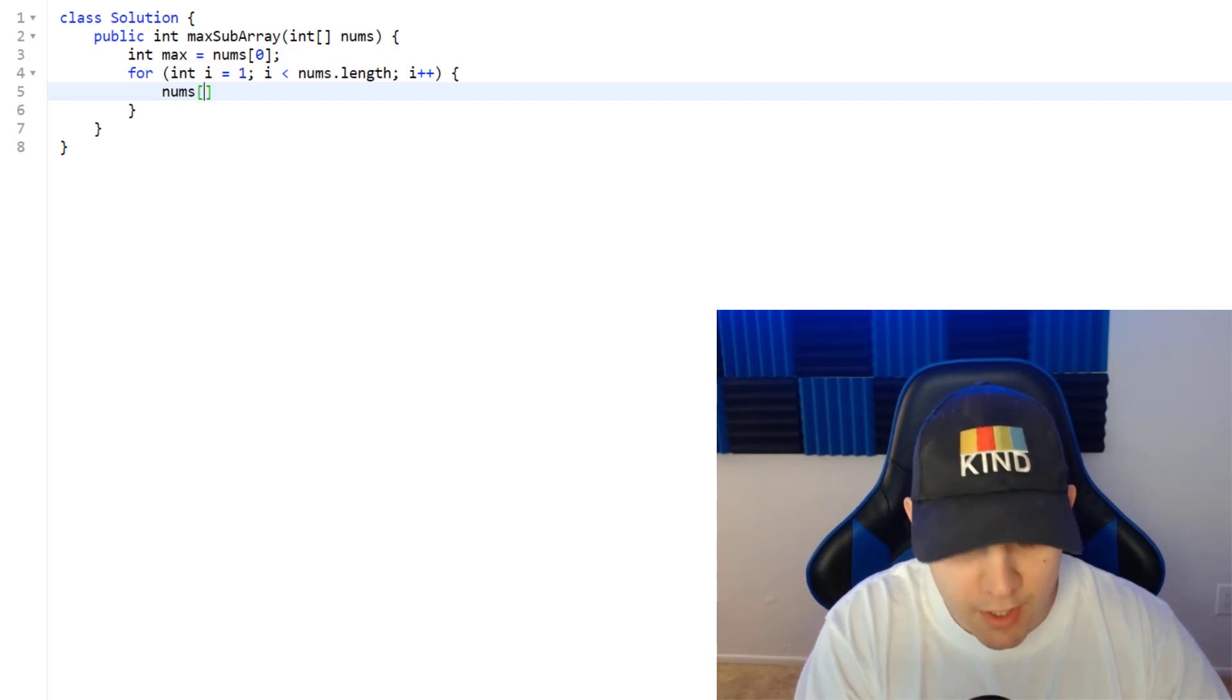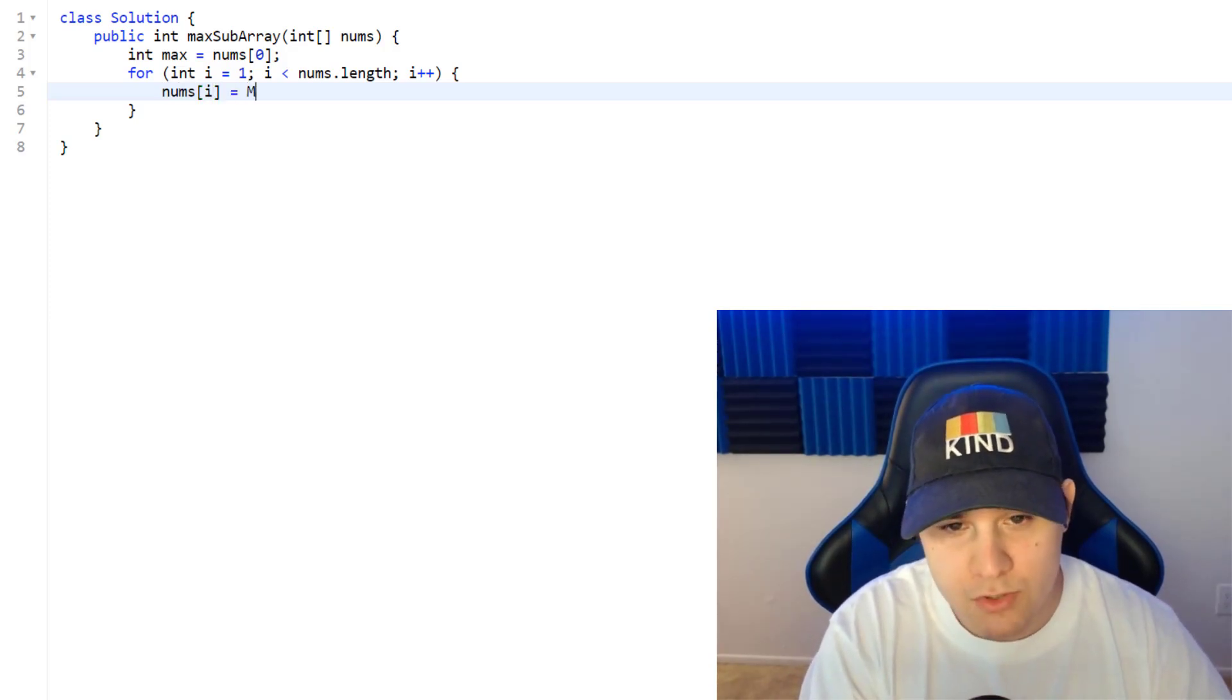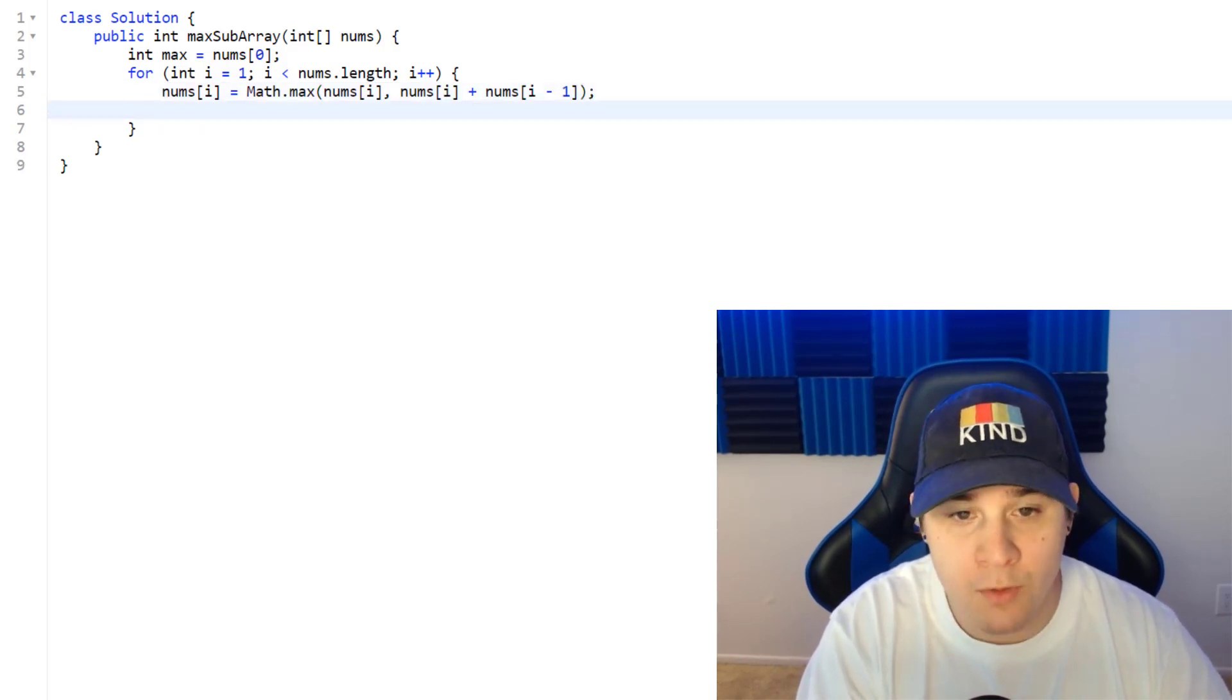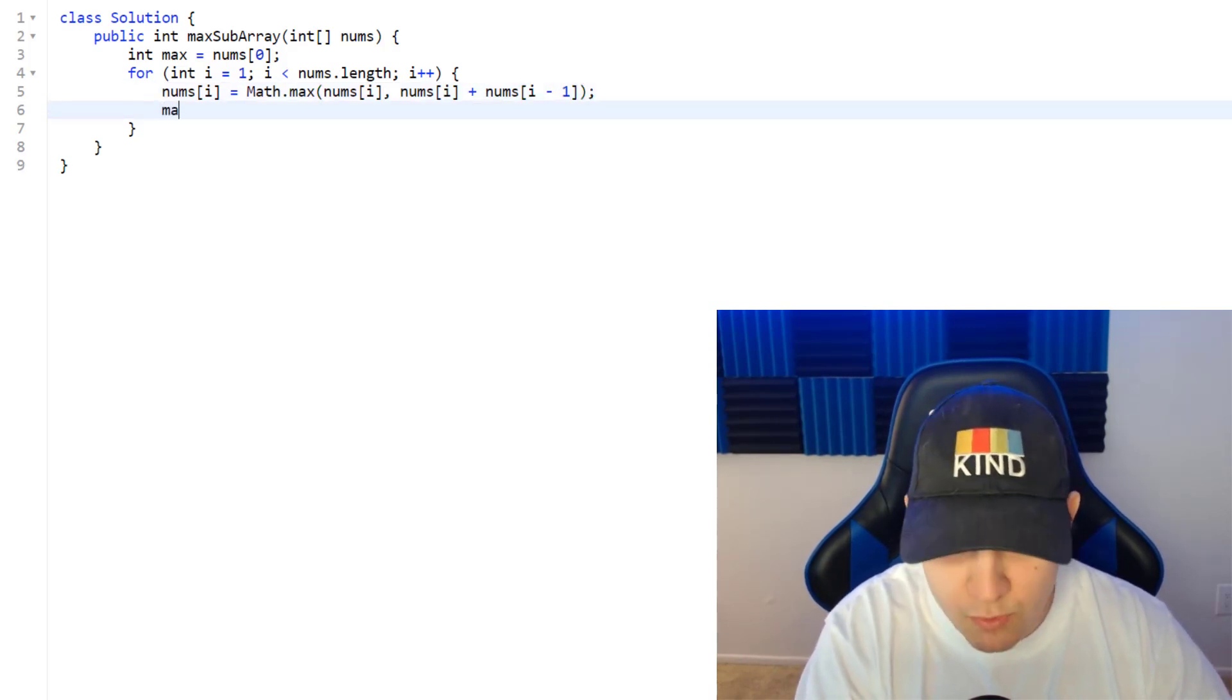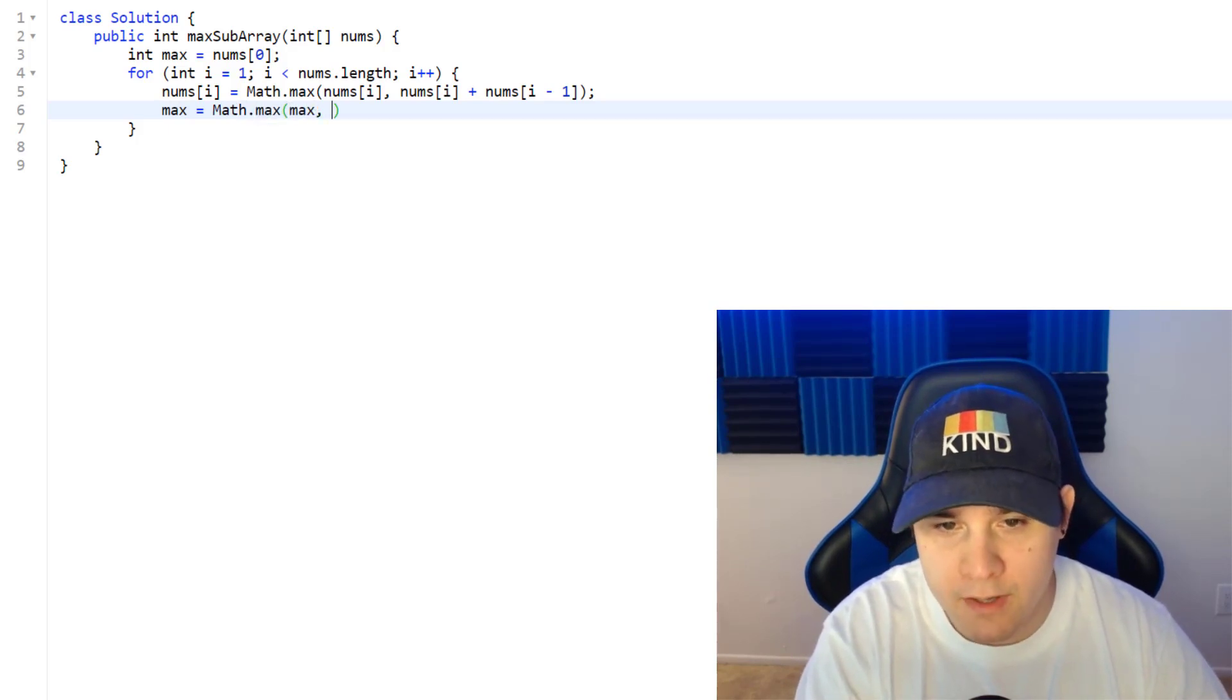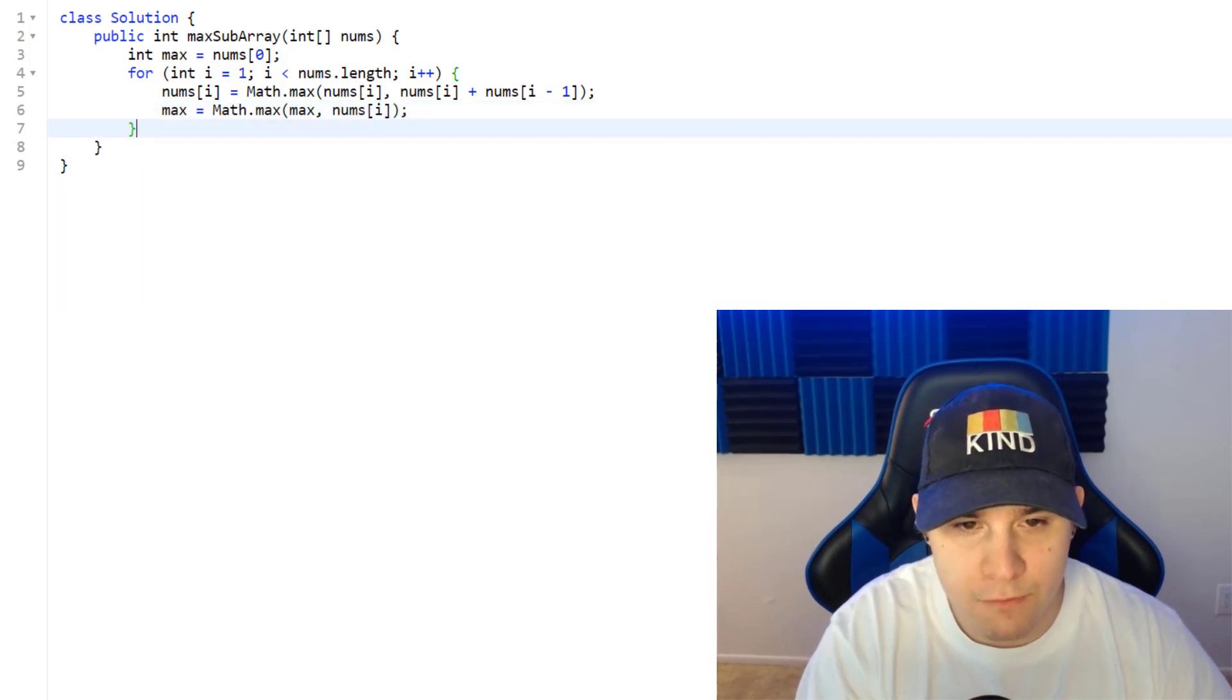And then this is where we're pretty much just using the formula that we already created. So we can say nums at our current position is going to be math dot max between nums at our current position or nums of a current position plus the previous position, which would be nums i minus one. And then we just compute our new max. So we say max equals math dot max between max, and then the current position we're looking at.